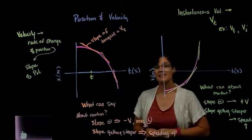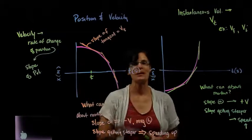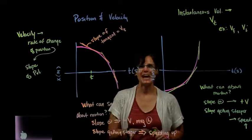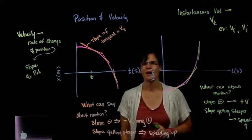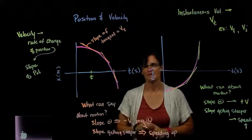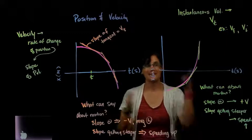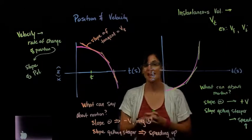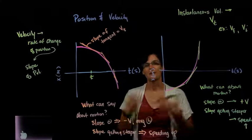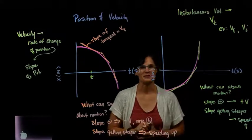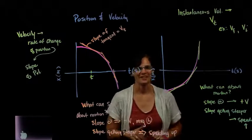In the next video, we're going to take this curved slope and see how to get it mathematically — how to look at a position versus time graph, get the actual velocity value out of it, and what that gives us in terms of a generalization of the relationship between position and velocity.